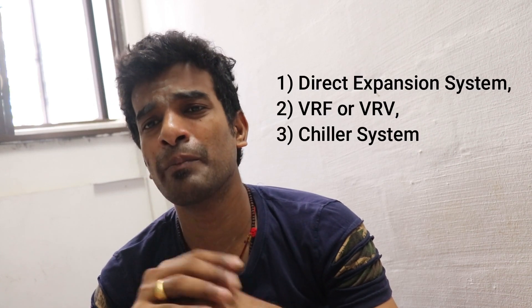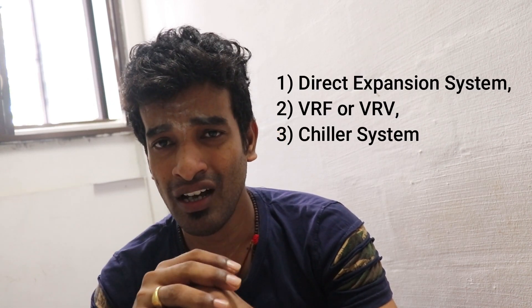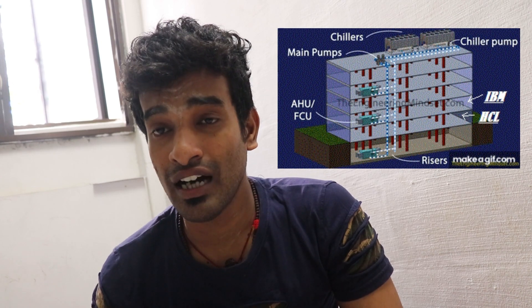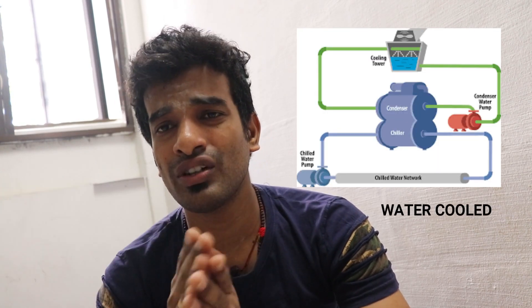Now the third type is the Chiller system. Consider an IT Mall with four, five, or ten floors. There is a common unit for tenants — for example, the first floor is HCL, the second floor is IBM, and the third floor is Olympia. There is a chiller plant with a cooling tower and a chiller system — water-cooled — covering all units.